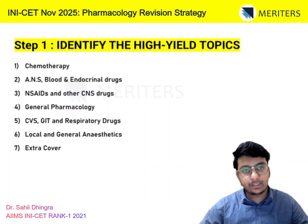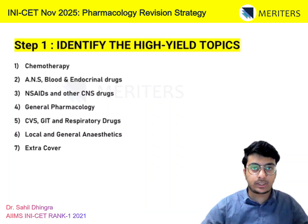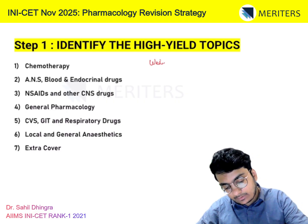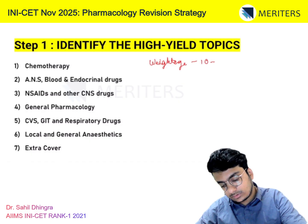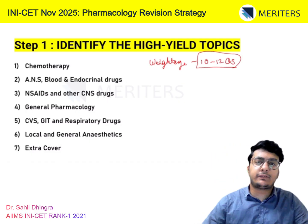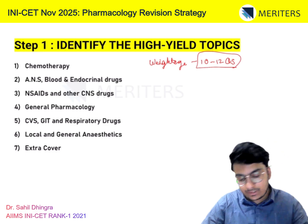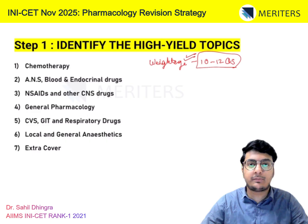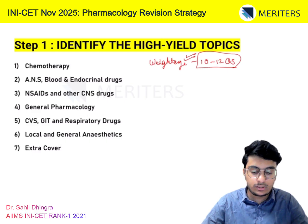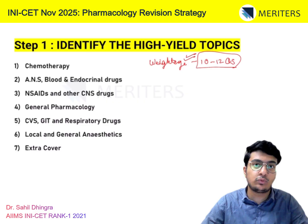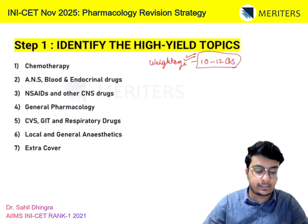First, you have to identify the high yield topics of Pharmacology for your INICT. Roughly, the weightage for Pharmac is around 10 to 12 questions — at times they can ask 14 to 15, sometimes 7 to 8, but the average is 10 to 12. This is the same as General Anatomy. So Anatomy and Pharmac are the 2 most important medical subjects for your INICT.